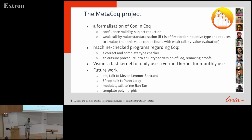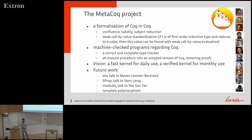In essence, MetaCoq is a formalization of Coq in Coq. As for other interesting type systems, we prove important results like confluence, validity, and subject reduction. We have a theorem that says that values of first-order inductive terms can be found by weak call-by-value evaluation, giving a hint at what evaluation strategy to use. We have several machine-checked programs in Coq: a correct and complete type checker, and the erasure procedure into an untyped version of Coq which removes proofs and types.